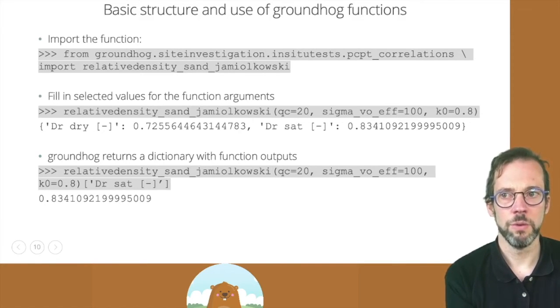And if we call it with a QC of 20 MPa, a vertical effective stress of 100 kPa, and a coefficient of lateral air pressure at rest of 0.8, we're going to get the dictionary with the output.